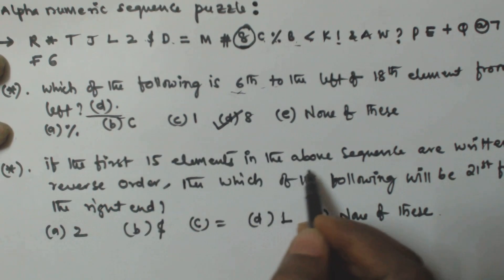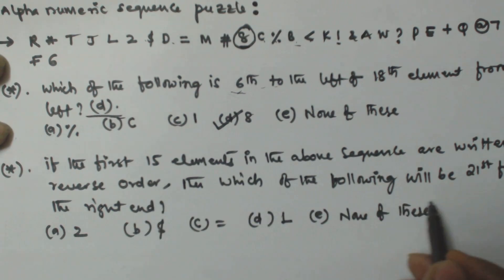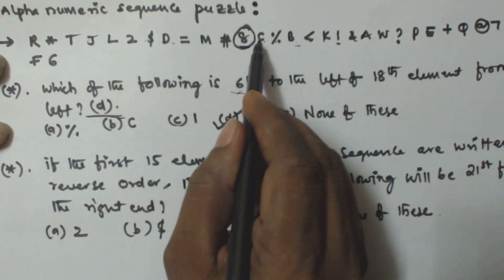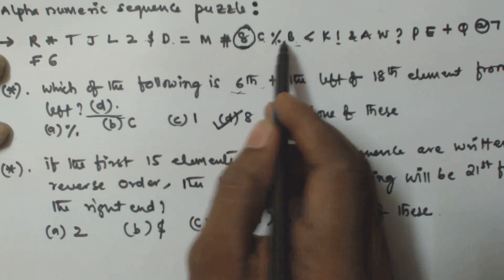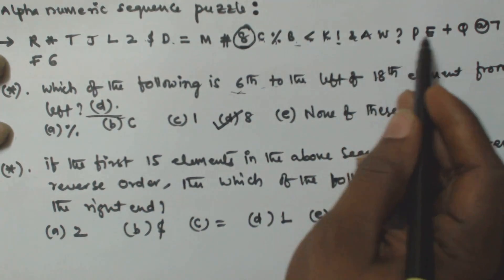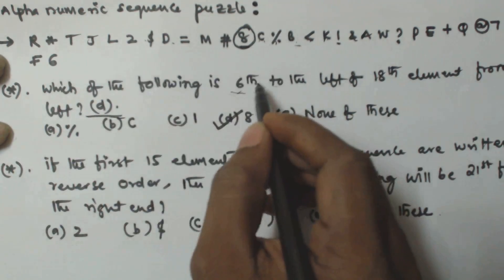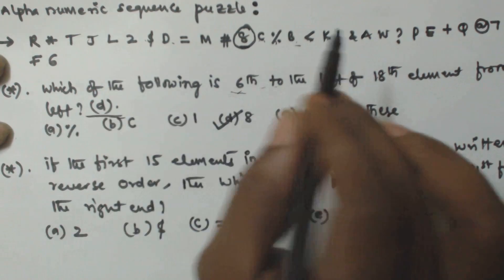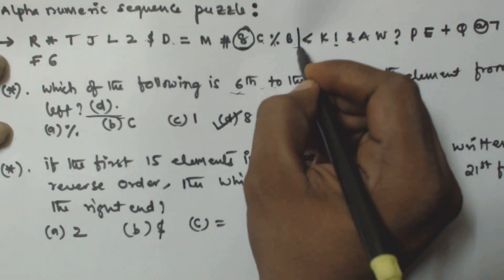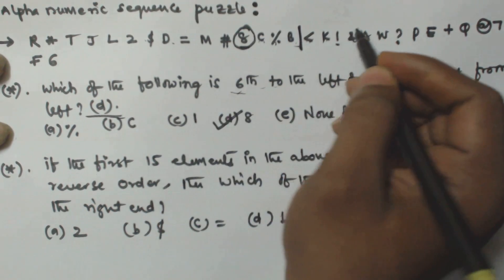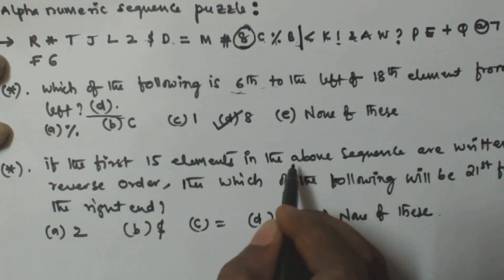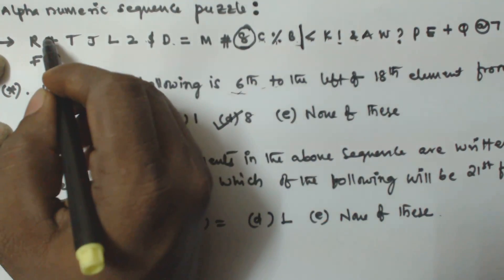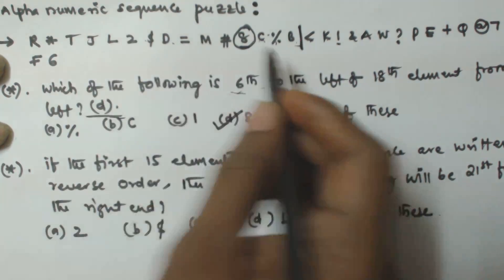For the second question — if the first 15 elements are written in reverse order, which is the 21st from the right? There are 30 total elements in the sequence. We divide them into two halves of 15. The first 15 elements are reversed, so R will come where B was, * will come where % was, and so on — all interchanged.